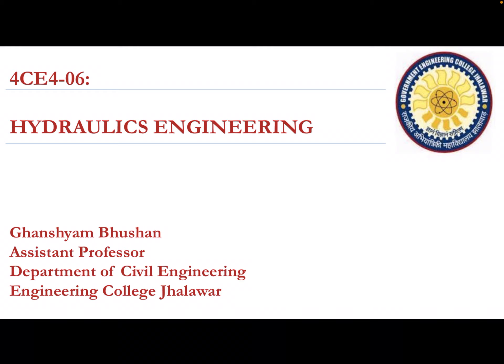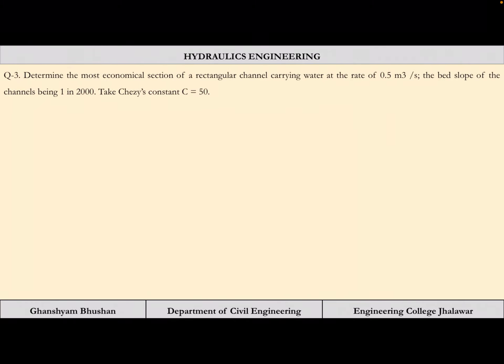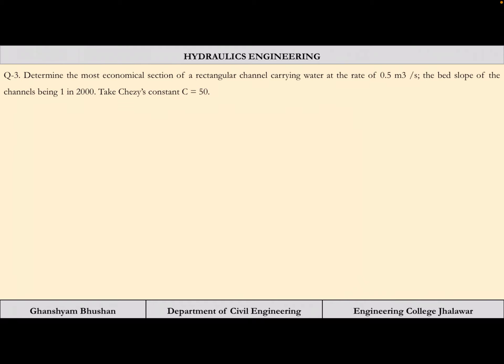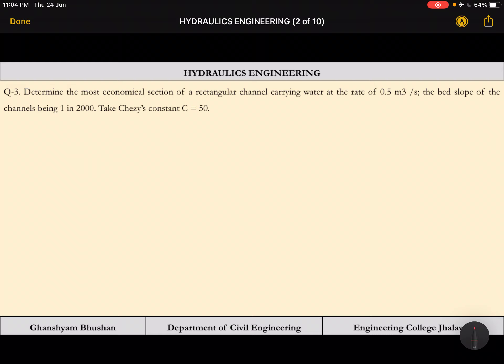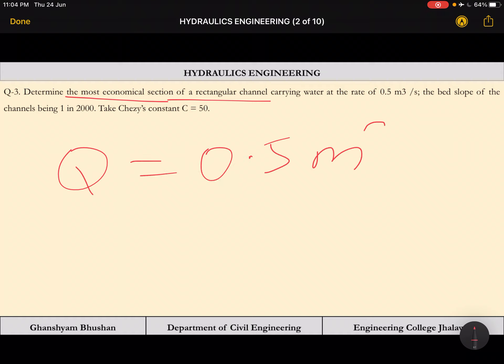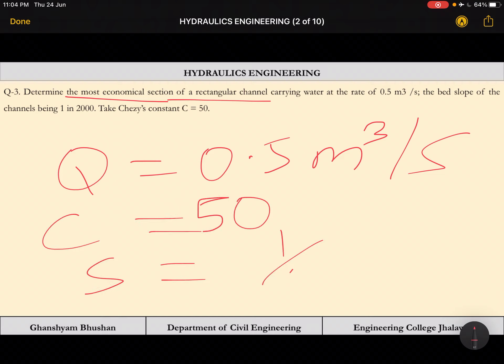The first question requires us to determine the most economical section of a rectangular channel carrying water at a rate of 0.5 meter cube per second. The bed slope of the channel is 1 in 2000 and Chezy's constant C is equal to 50. So Q is 0.5 m³/s, C is 50, and S is 1/2000.